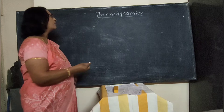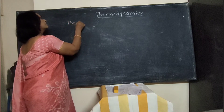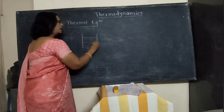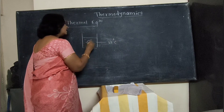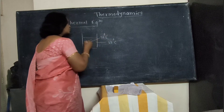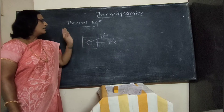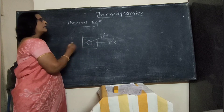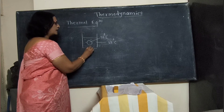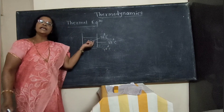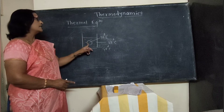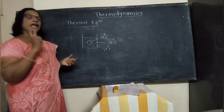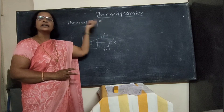Now we have to learn the concept of thermal equilibrium. Suppose there are two objects. The first object is water at a temperature of 50 degrees Celsius, and a sphere which is at 30 degrees Celsius. When that sphere is dropped in this water, heat always flows from higher temperature to lower temperature. In this case, it flows from the water to the sphere until the temperature of both objects becomes 40 degrees Celsius. Therefore, when two objects are at the same temperature, we can say that the system is in thermal equilibrium.